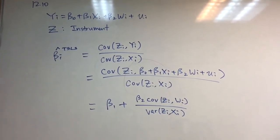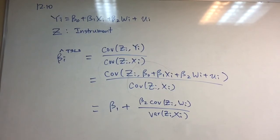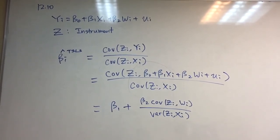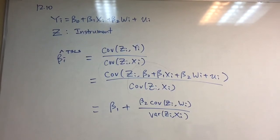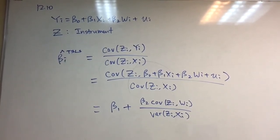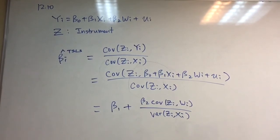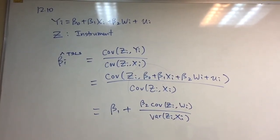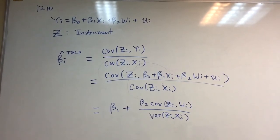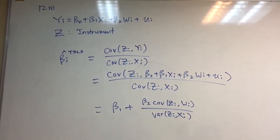In part a, if the covariance of zi and wi is equal to zero, then beta_1_hat converges to beta_1, so this is consistent. In part b, if the covariance of zi and wi is not equal to zero, then beta_1_hat does not converge to beta_1, showing inconsistency.